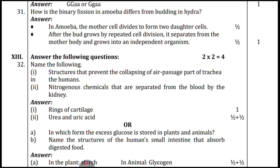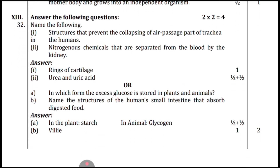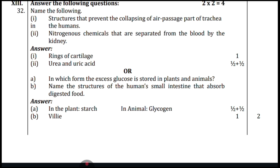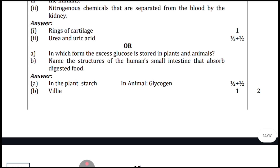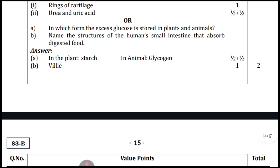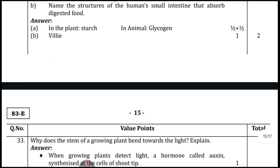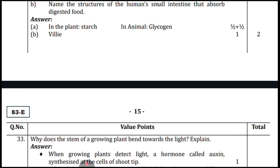Two-mark questions: name the structure that prevents collapsing of the air passage (trachea) in humans — answer: rings of cartilage. Name the nitrogenous chemicals separated from the blood by the kidney — answer: urea and uric acid. In which form is excess glucose stored in plants and animals? In plants: starch; in animals: glycogen. Name the structure of the human small intestine that absorbs digested food — answer: villi.